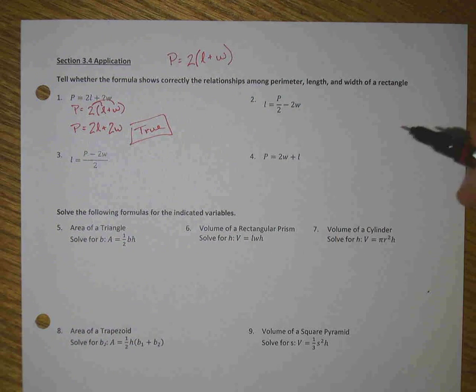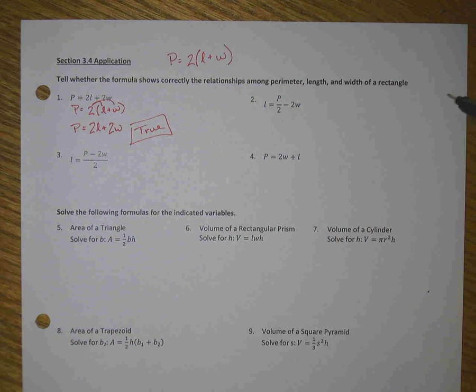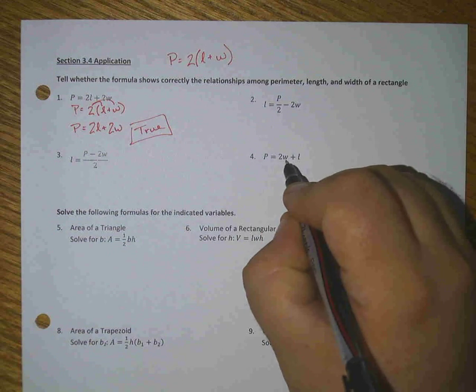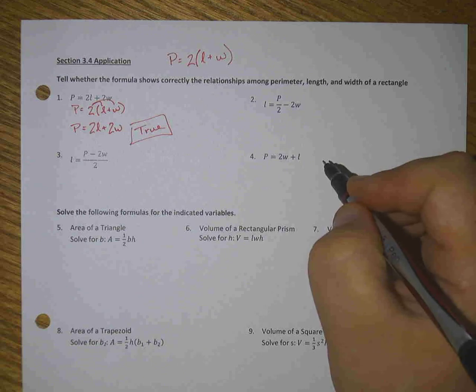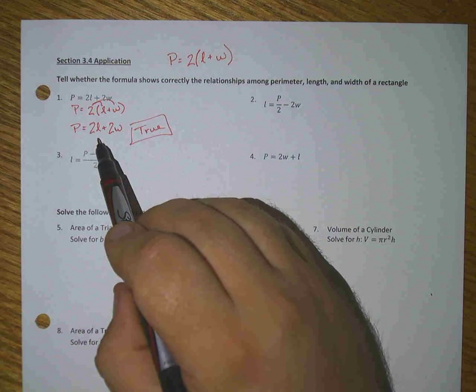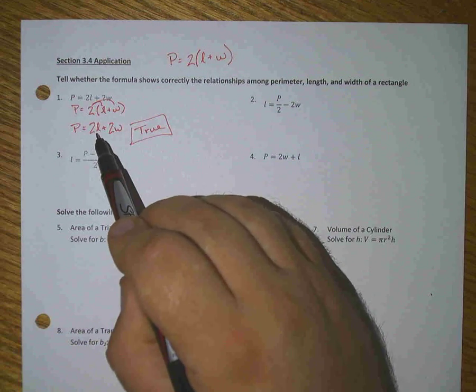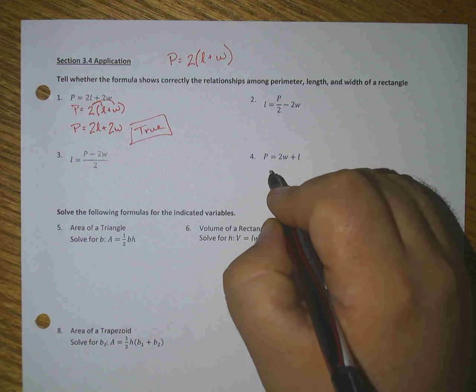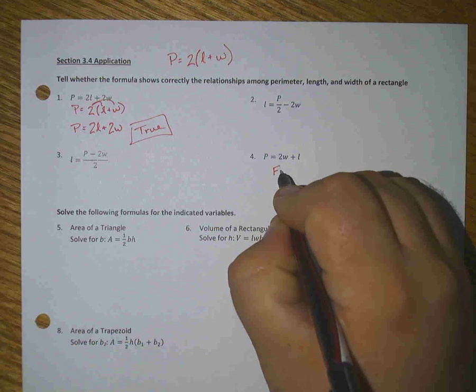Let's look at number four. Is there a way to have P = 2w + l? Well, it doesn't look like it because I can't get rid of that other two. There's no way to make that step, so I'm going to say that's false.